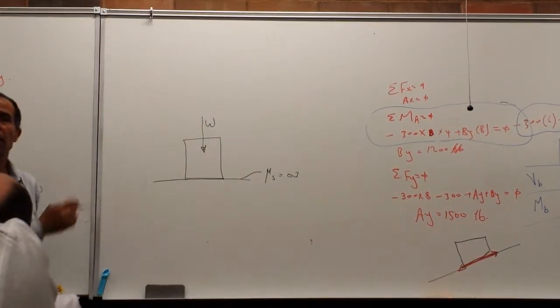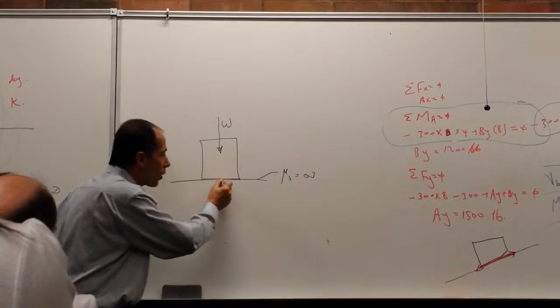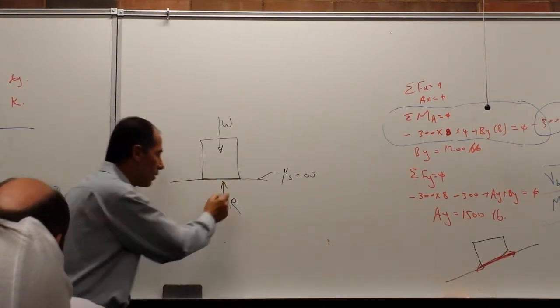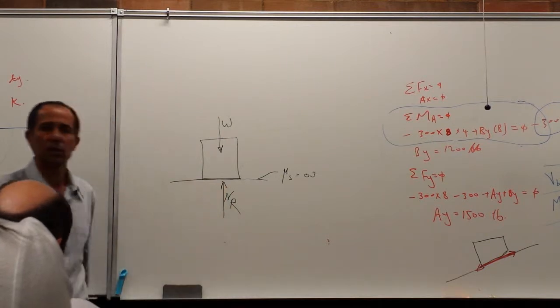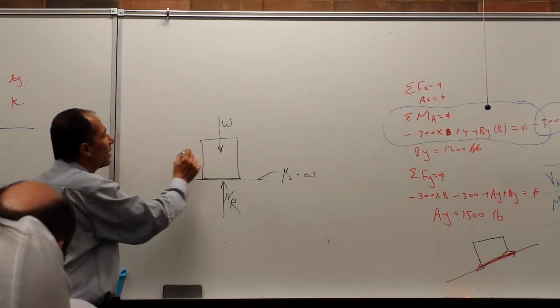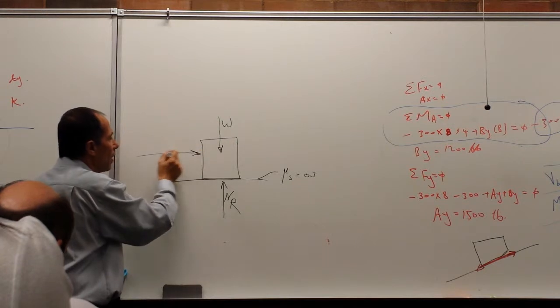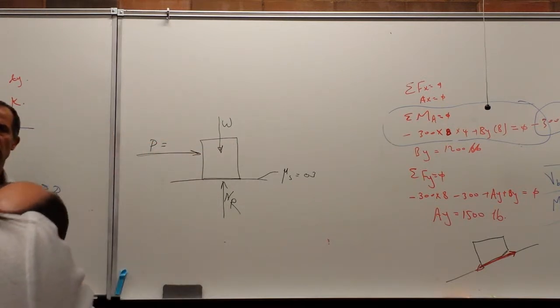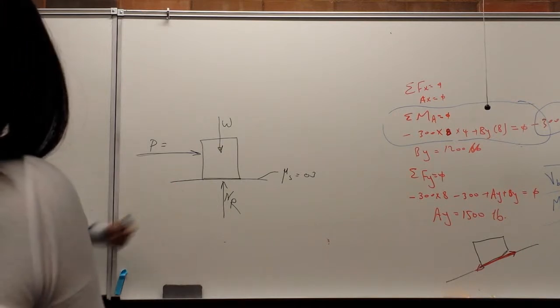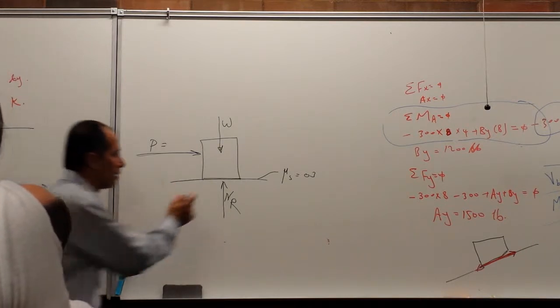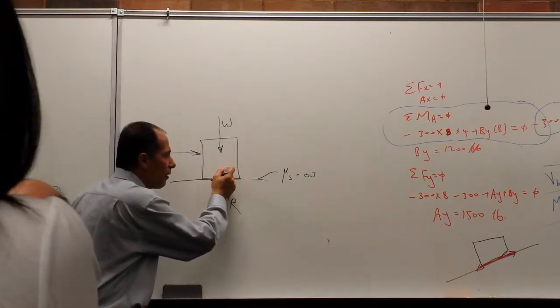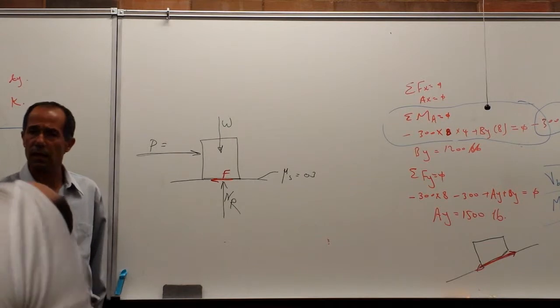This is as a W. From this W you have a normal reaction. Normal reaction. If I apply a force here in any direction, it doesn't matter, force P. What I should expect from the surface in here? Resistance from here. Of friction.